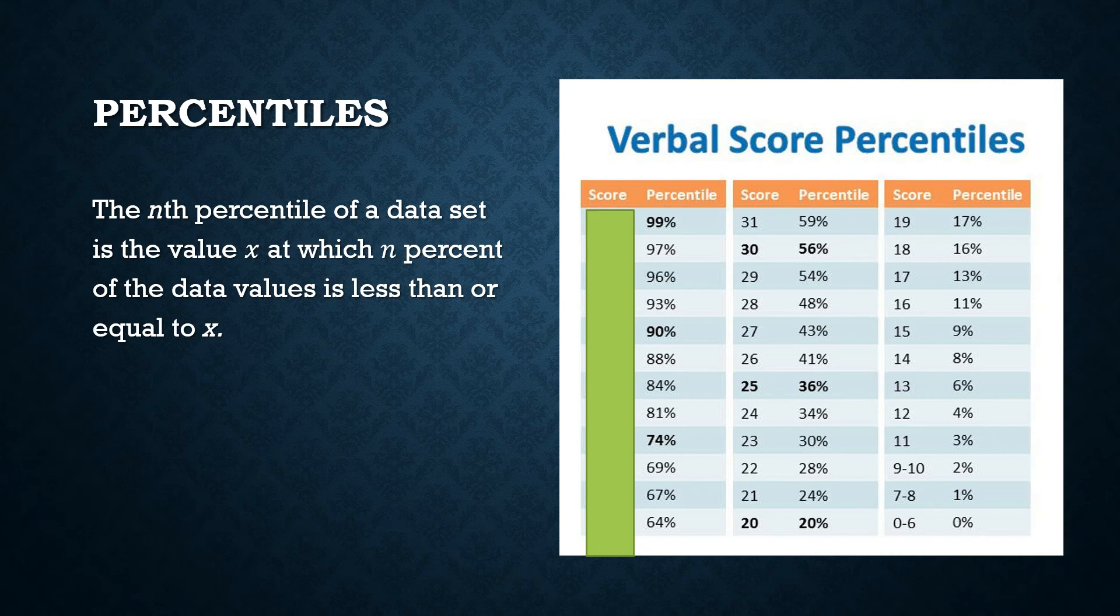If you receive your percentile score, let's say, for example, your percentile score is 84% or 84%, what that means is your score is better than 84% of the students who took that same exam. Again, it's a measure of relative position.